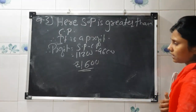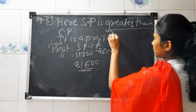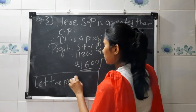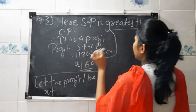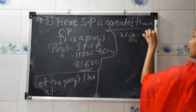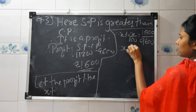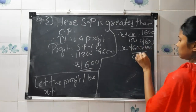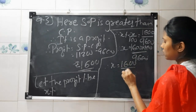Now we have to find the profit percentage. Let the profit percentage be X percent. Therefore, X upon 100 equals profit divided by cost price, that is 1600 upon 9600. By cross multiplication, X equals 1600 multiplied by 100 upon 9600. Cancelling zeros, we get 1600 upon 96.